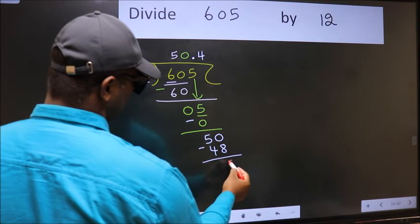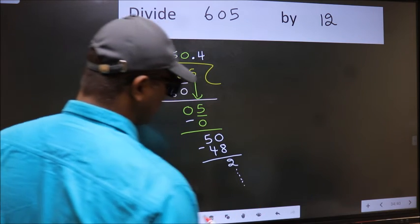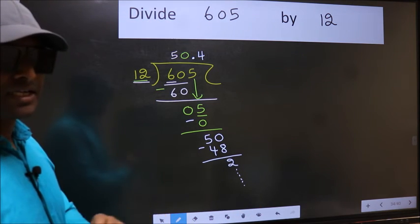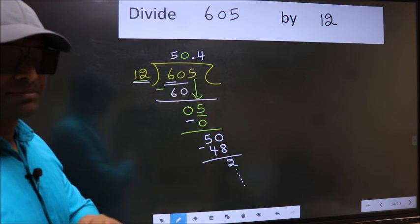Now you should subtract. You get 2 and continue the division. I am not doing that. Did you understand where does the mistake happen? You should not do that mistake.